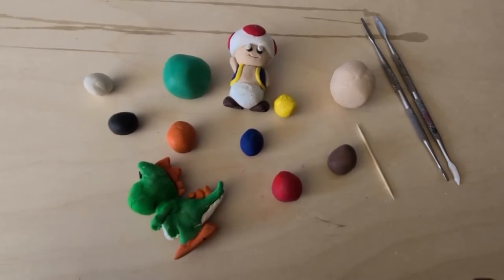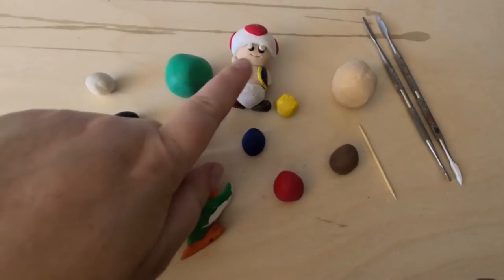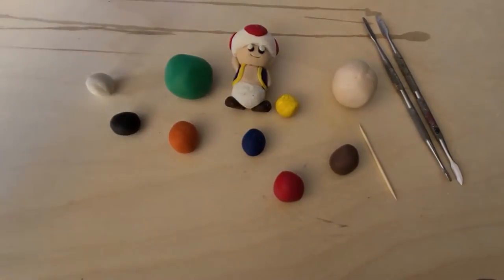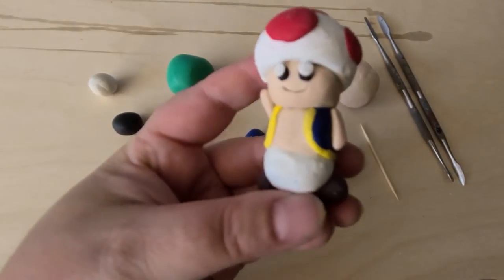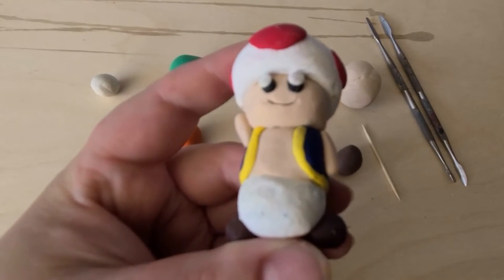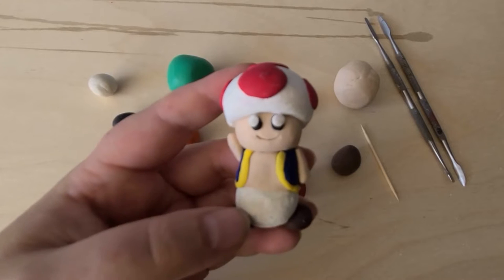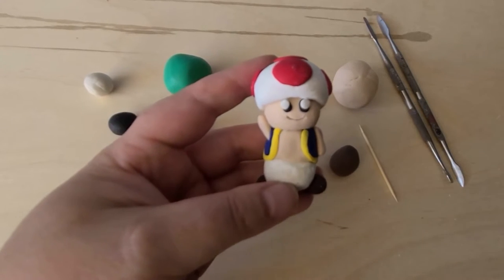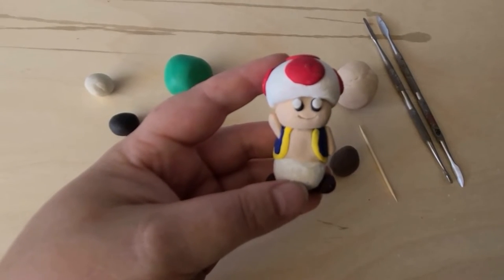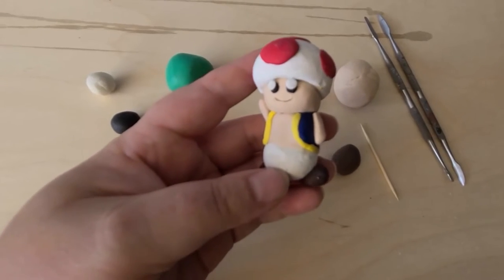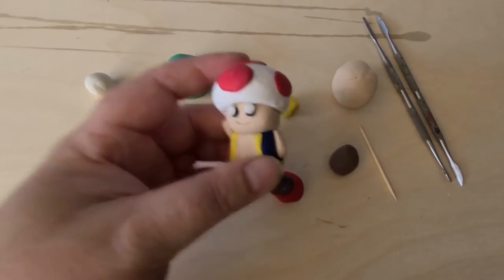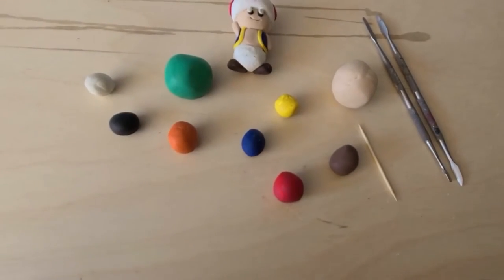So the first thing we're going to do, we want to start with one of two of these characters and I'm going to suggest we start with Toad and I'll tell you why. Toad has a lot of white or skin tone on him, which means if you touch any of these other colors, it's going to pick up the colors. You'll notice that your hands get stained quite often with the colors. So we want to make sure that we are using nice clean hands just like we want to use a nice clean surface.